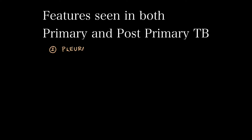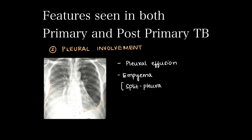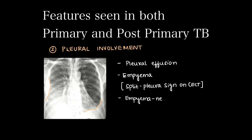Next is pleural involvement in tuberculosis, which is very important. It can be in the form of pleural effusion or empyema, which shows the classical split pleura sign on contrast enhanced CT scan. If this empyema ruptures out to the skin surface it is called empyema necessitans.